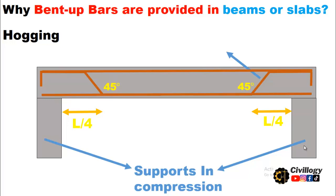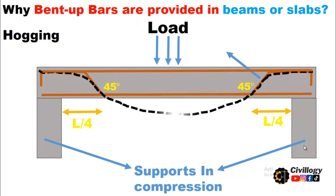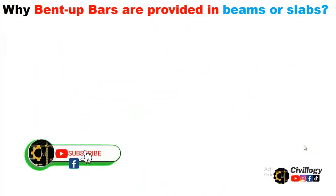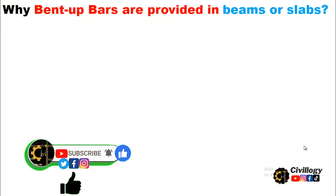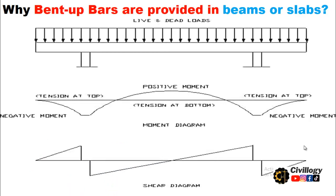When the beam is subjected to loading, it experiences bending at the mid-span of the beam, called sagging. The ends of the beam get slightly raised and are called hogging. To make it easier to understand the purpose of crank bars, let's assume the beam subjected to loading. This is the bending moment diagram.